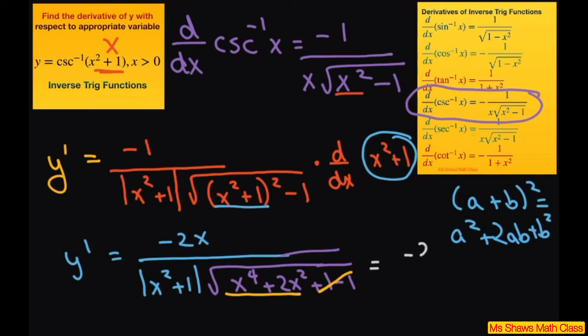You can write this as negative 2x divided by absolute value of x squared plus 1. And I can factor out an x squared and then multiply this by x squared plus 2.